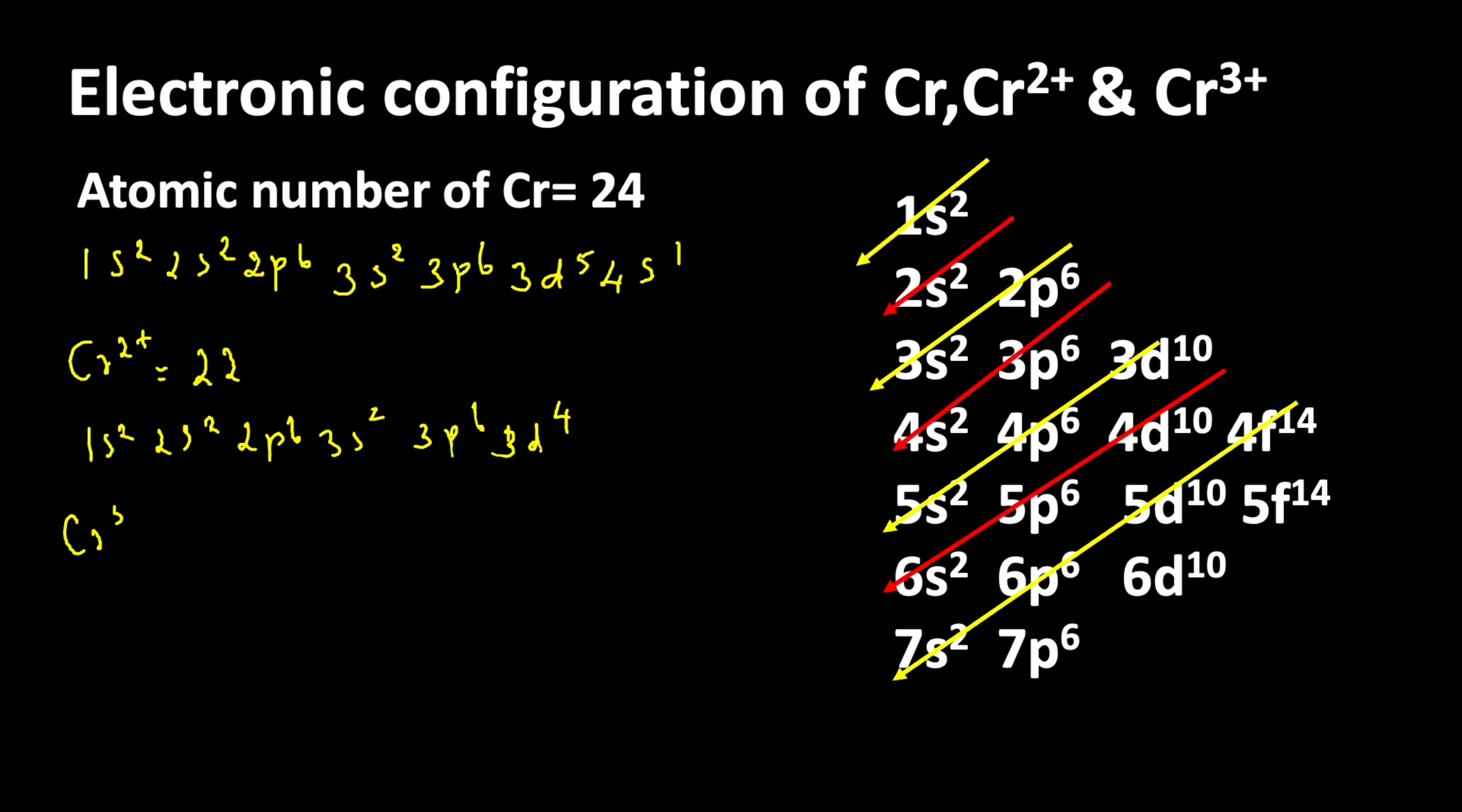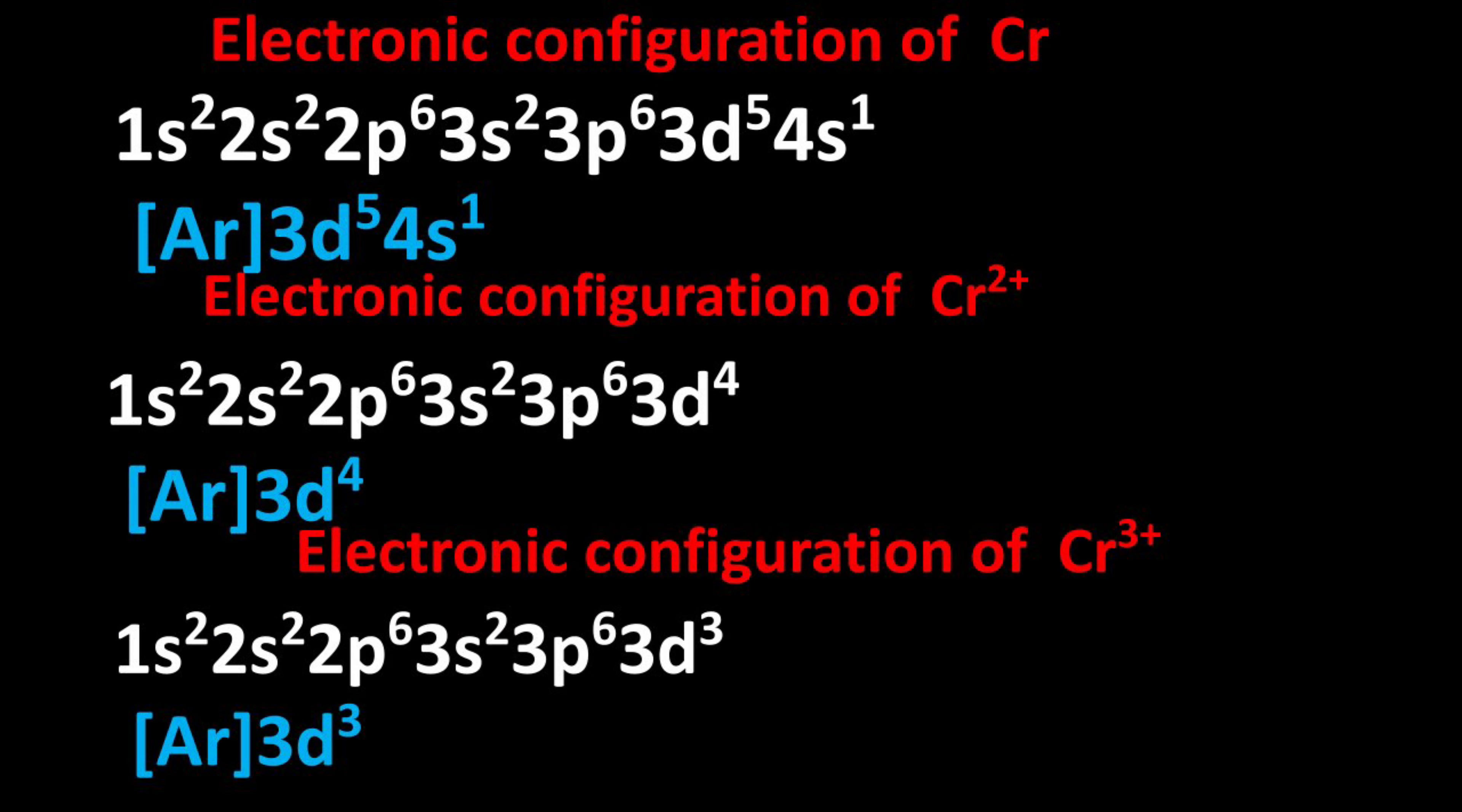For Cr³⁺, three electrons are lost from chromium. The electronic configuration is 1s² 2s² 2p⁶ 3s² 3p⁶ 3d³. This has one less electron compared to Cr²⁺. This completes the electronic configuration of Cr, Cr²⁺, and Cr³⁺.